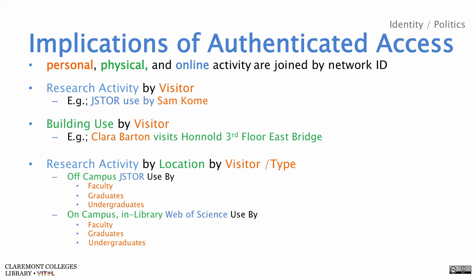Here are the implications. The personal PII — name, patron type, whatever demographics you've got — the physical location, and the online activity can all be joined together by the network ID. That was kind of a revelation to me. Research activity by user — that's not new, we could do that before with EZProxy. But building use by visitor — that was new to me. Combine all three and I can tell you research activity by location by visitor, or research activity by visitor type. On campus, in the library, Web of Science use by faculty member from HMC — that's totally doable. It's kind of trivial, actually, because I did it.